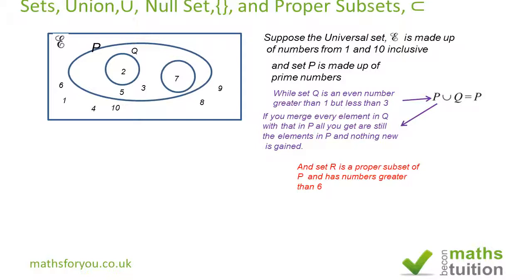Next, we are told that R is a proper subset of P and has numbers greater than 6. It's a proper subset in the sense that it's got elements in R but not as many as in P. Some of the elements in P are also in R. In this case, only 7 is in set R.